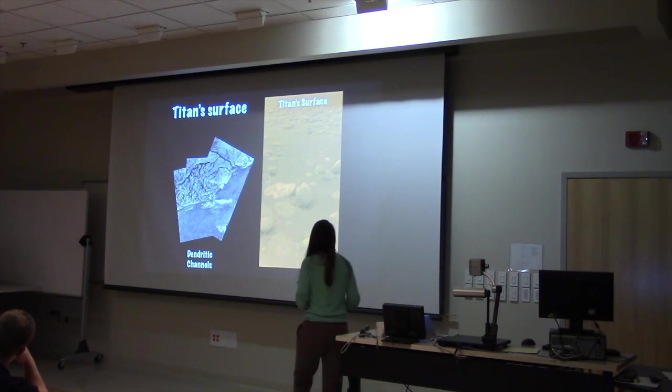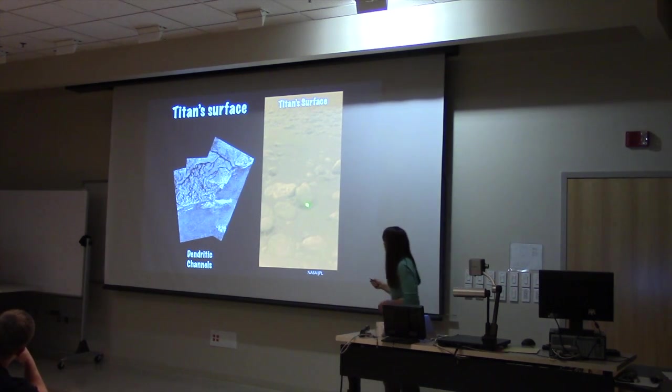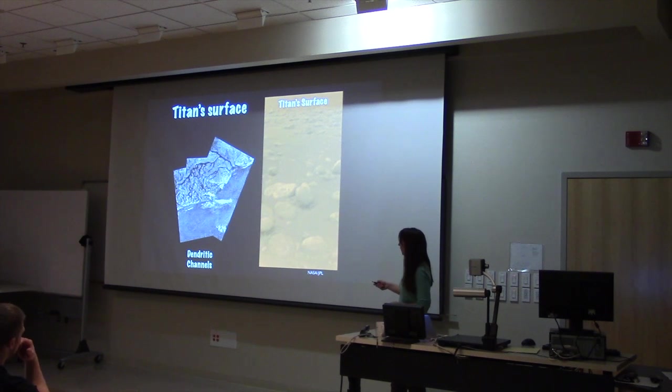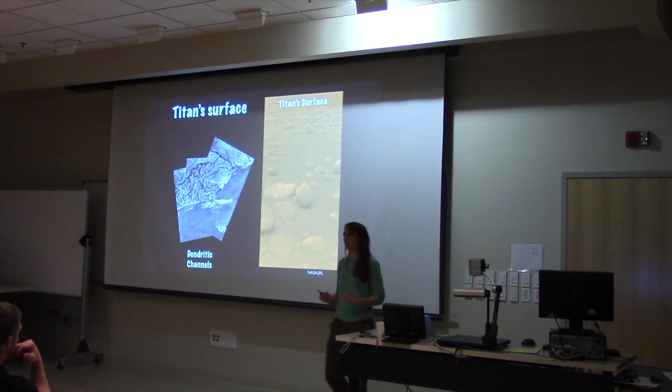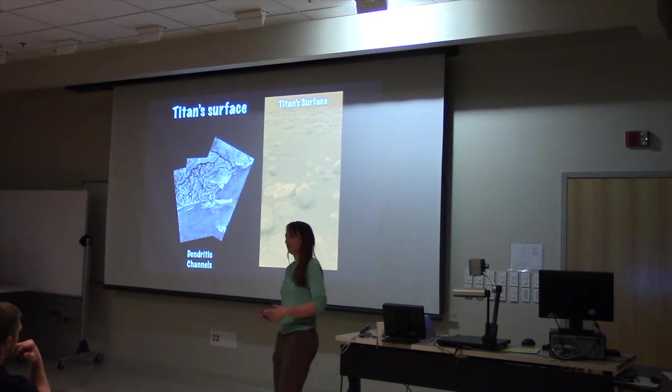Here is an actual image from the surface, from the Huygens probe. And here you can see those rock features that the video was talking about. All of these icy moons, they're made up of water ice. It's basically as hard as silicate rocks are here on the surface of the Earth.